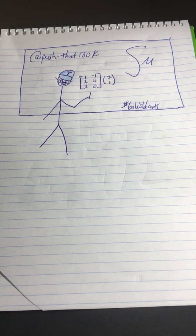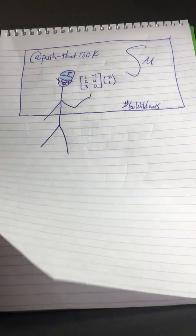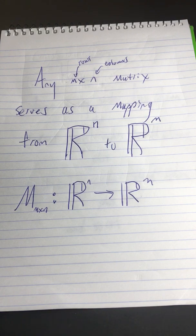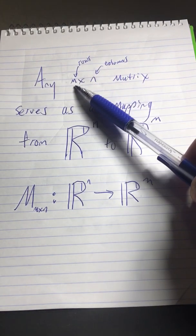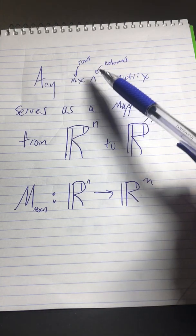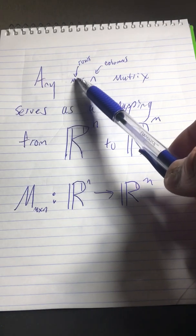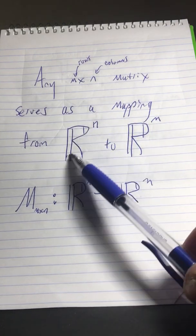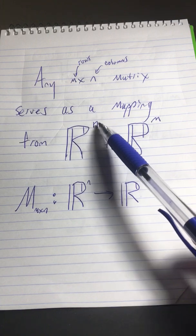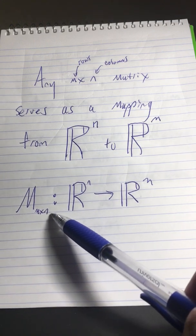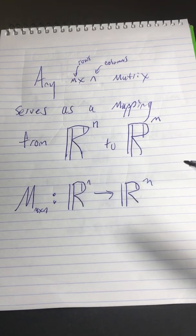Push That Rock here with Simpson Math. Let's talk about matrices as functions. Any n by n matrix serves as a mapping from R^n to R^m. m is the number of rows in the matrix, n is the number of columns. Notice that the number of columns determines the domain while the number of rows determines the co-domain. So an m by n matrix maps R^n vectors to R^m vectors.